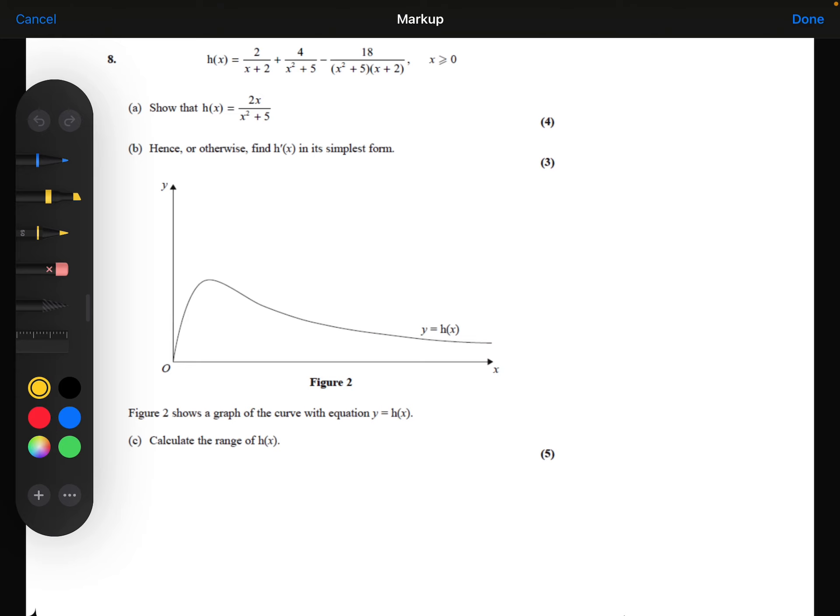I notice that this is a quotient. I've got the 2x that's being divided by the x squared plus 5. So I need to use the quotient rule to differentiate this. So let's let u be 2x and let's let v be x squared plus 5. So u dash would be 2, v dash would be 2x.